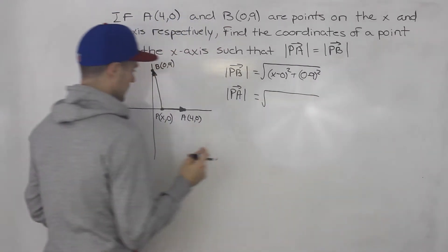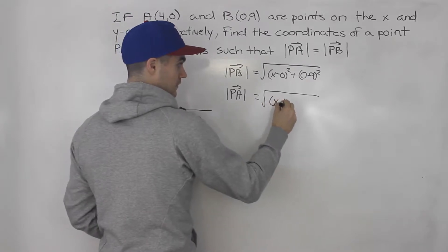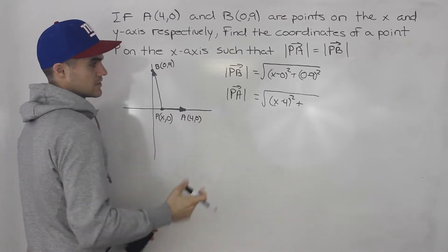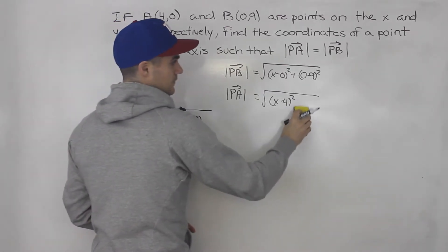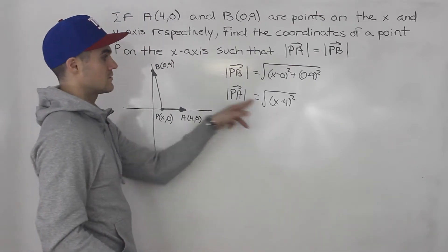And then for PA, it's going to be (x - 4)², plus (0 - 0)² is just 0. So really, it's just this for the magnitude of PA.